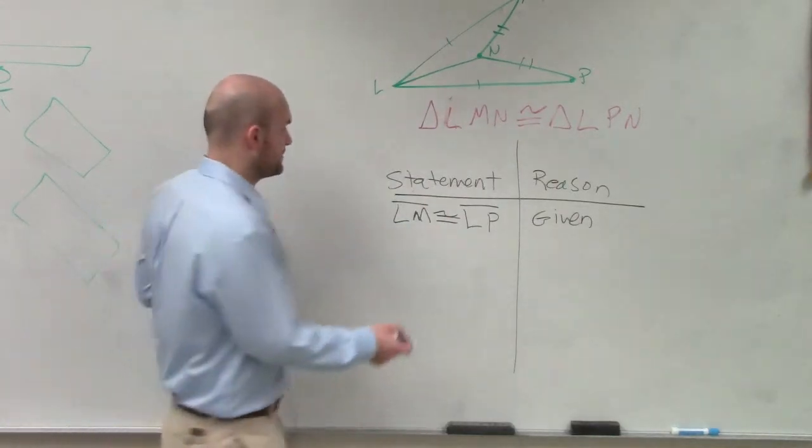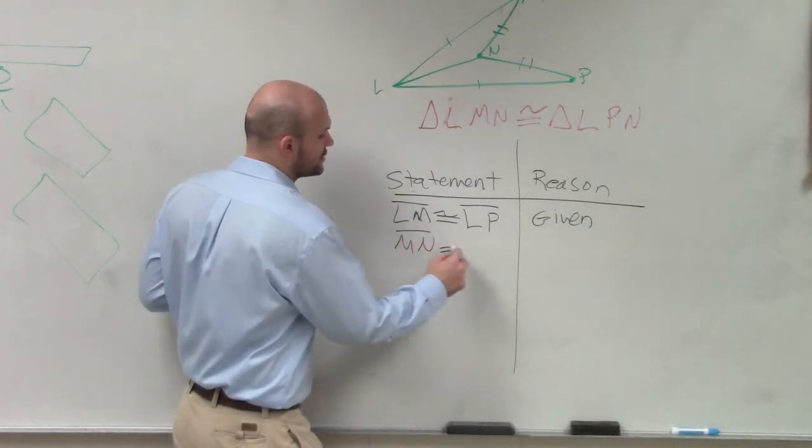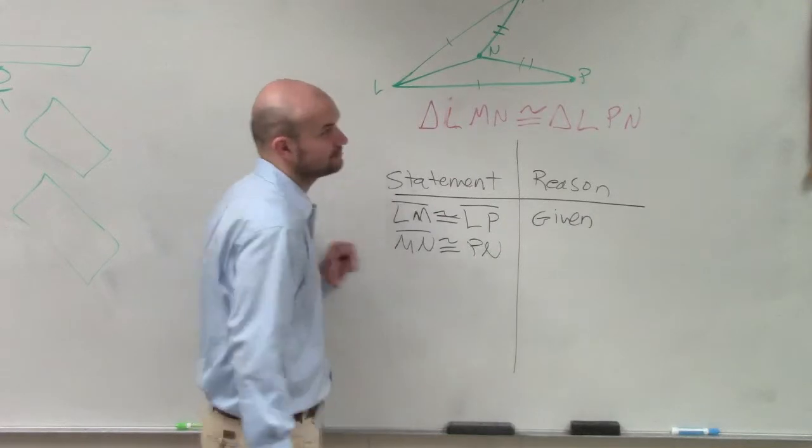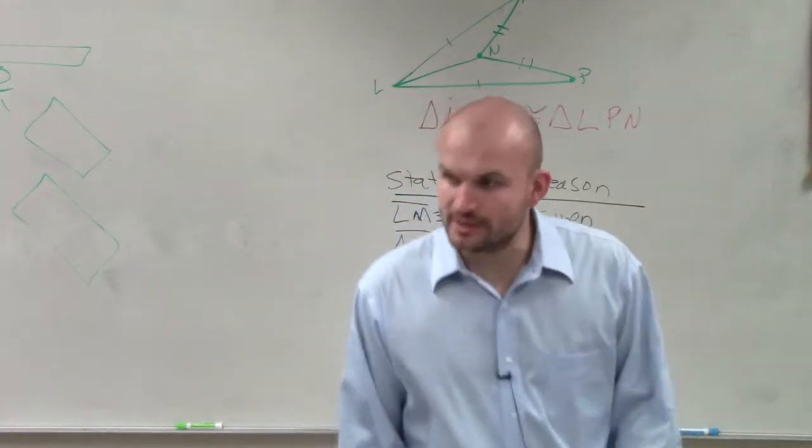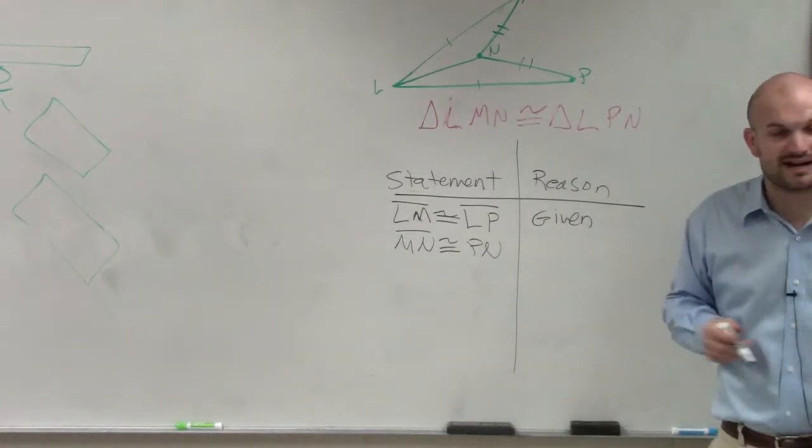What's the next thing, Jake? The next thing is we can say MN is congruent to PN. Why do we know that they're equal in measure? Because again, you see you have two tick marks, and that was provided to us in the image.